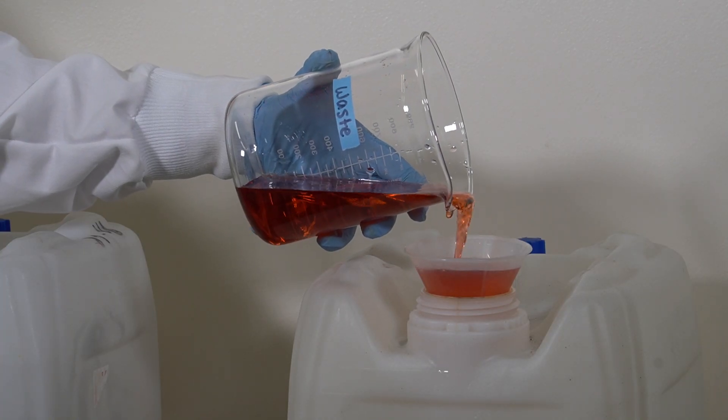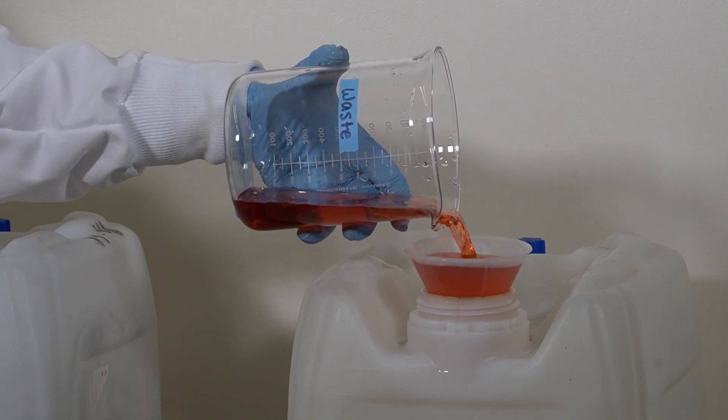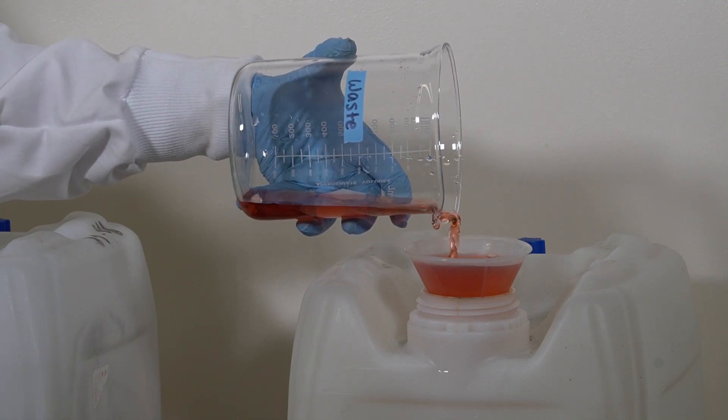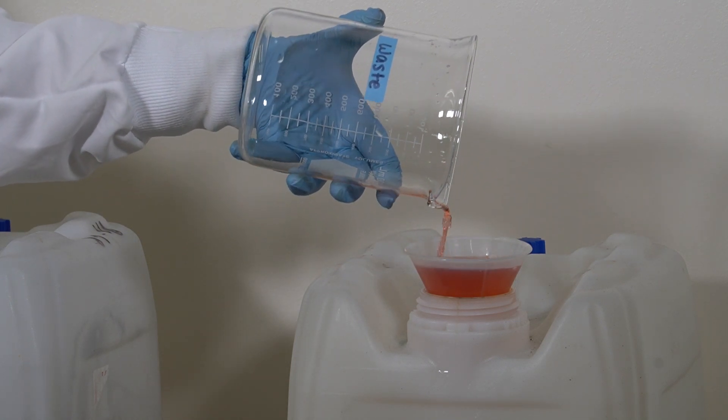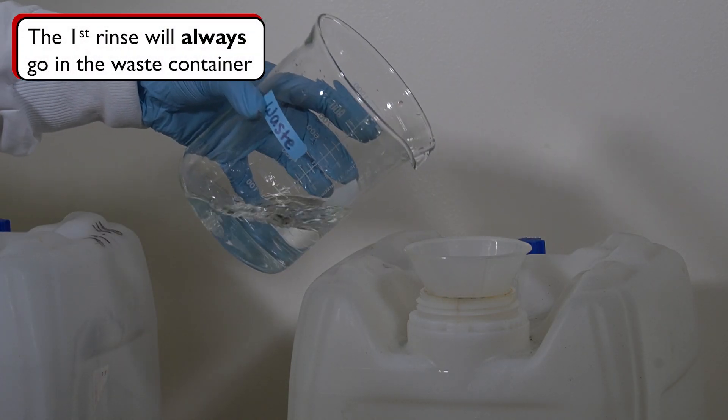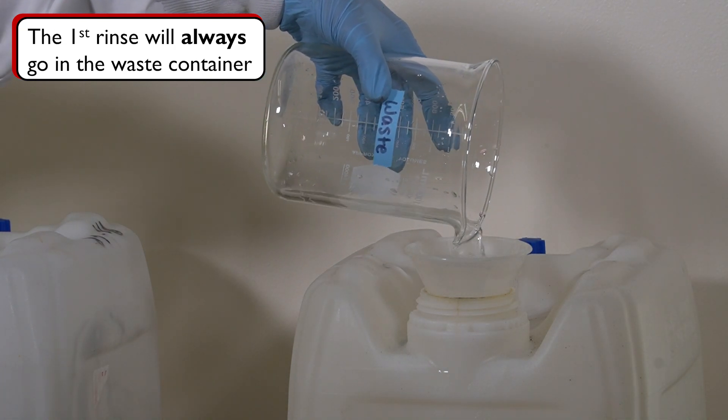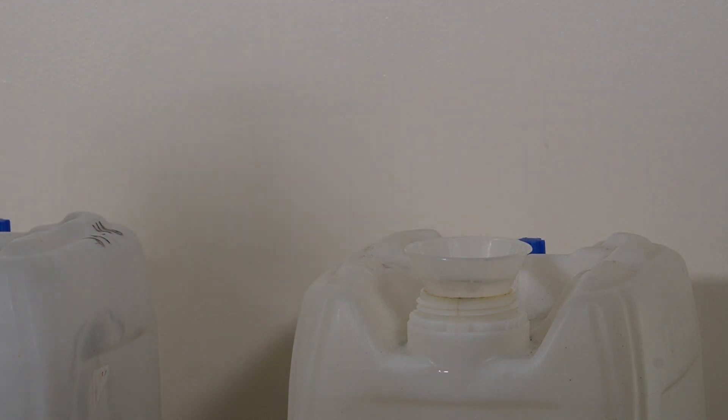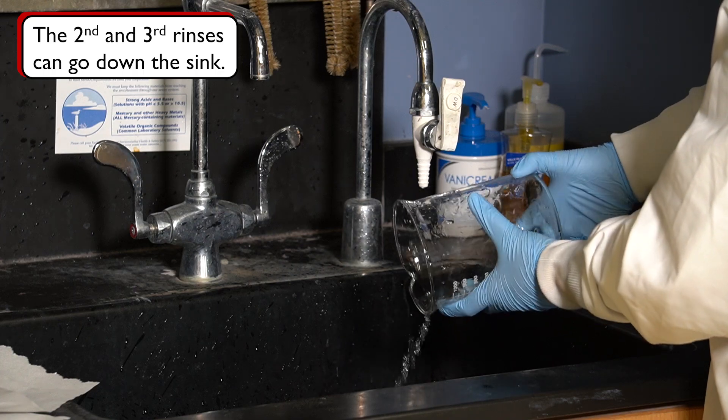At the end of the experiment, you should always remember that a temporary waste beaker needs to be cleaned. Make sure to empty the waste beaker completely and rinse it with small amounts of DI water 2-3 times. The first rinse is also waste and must be disposed of in the waste bin, while the others can go down the sink.